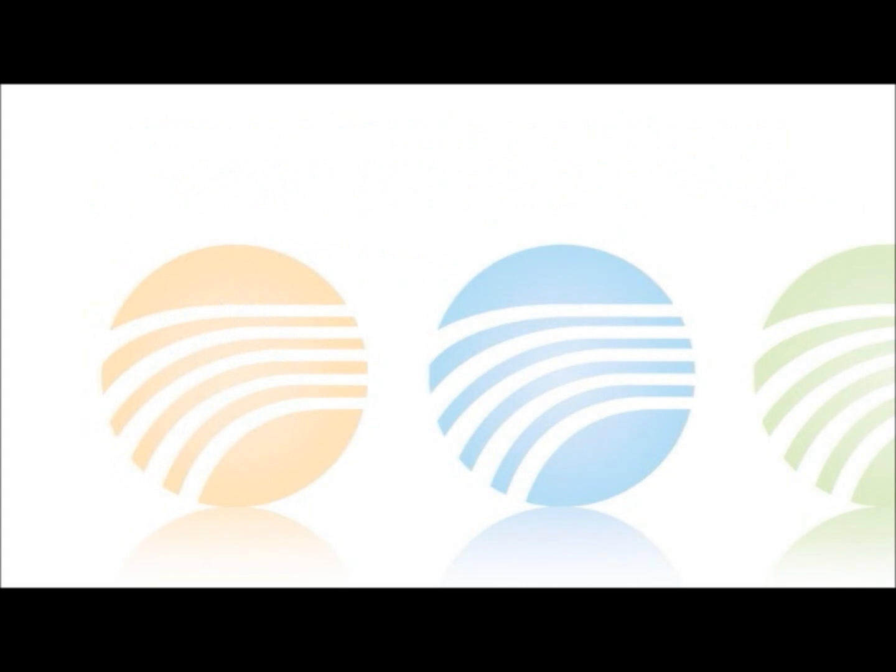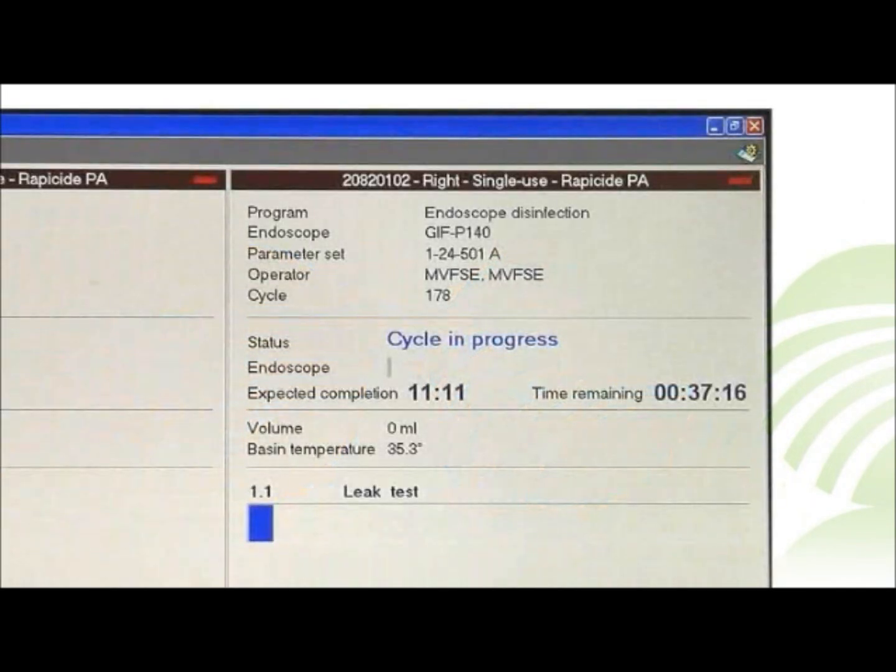The progress of the reprocessing cycle is presented on the user screen. Find the endoscope number, operator ID, and cycle number for that basin. Status, expected completion, time remaining, and phase are noted next.